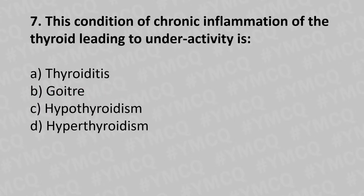Now let's move to question number seven. This condition of chronic inflammation of the thyroid leading to underactivity is: option A - thyroiditis, option B - goiter, option C - hypothyroidism, option D - hyperthyroidism. The answer is option A - thyroiditis.